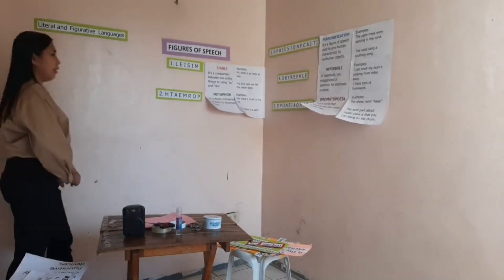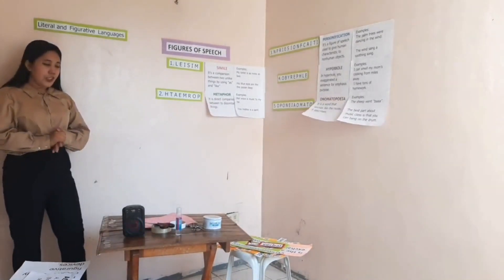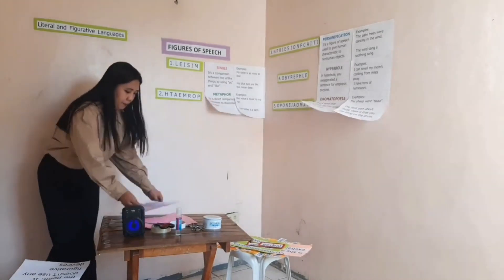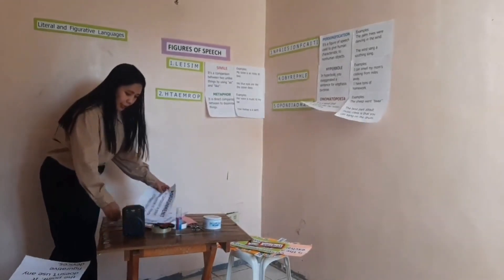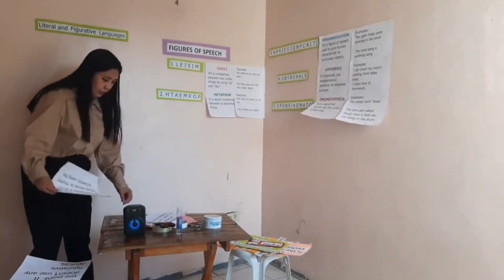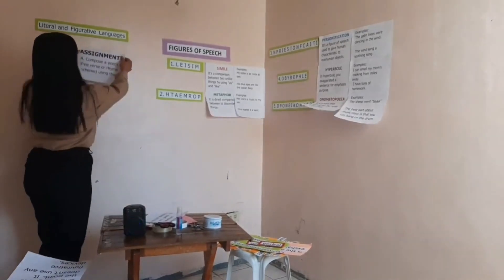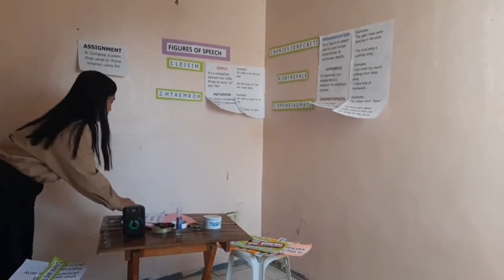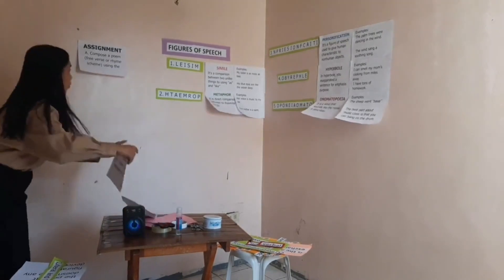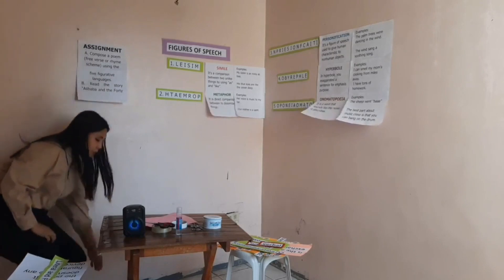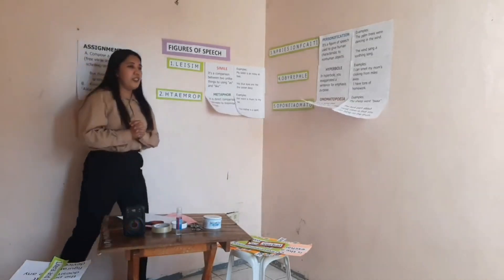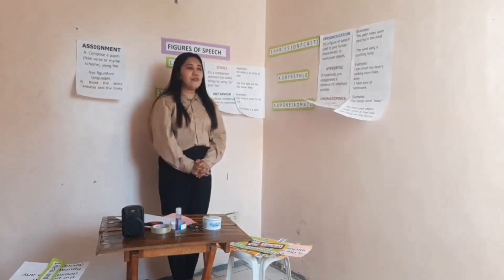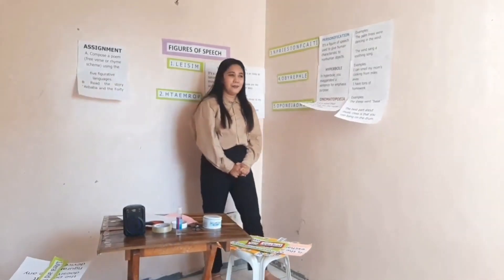Time's up. For your assignment, you are going to compose a poem of three stanzas using the five figurative languages — simile, metaphor, personification, hyperbole, and onomatopoeia. Do you have any questions regarding our lesson for today? None. I think that would be all. Let's call it a day. Goodbye, class. Thank you.